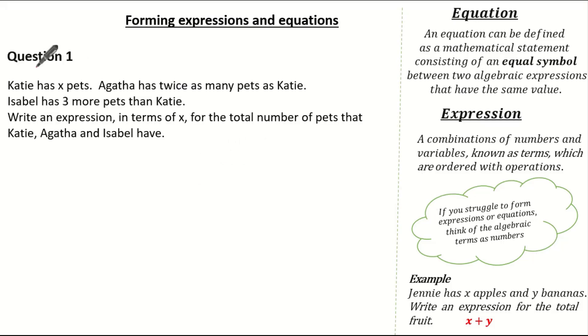Here it states Katie has x pets, Agatha has twice as many pets as Katie, and Isabel has three more pets than Katie. Write an expression in terms of x for the total number of pets that Katie, Agatha and Isabel have. Well firstly let's identify what we have. We have Katie, Agatha and Isabel. We know Katie has x pets, so I'm just going to label x under Katie.